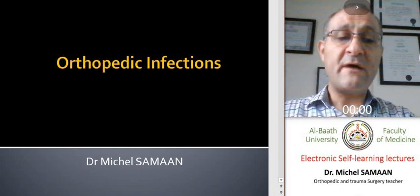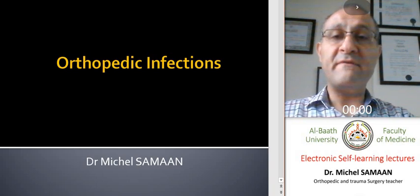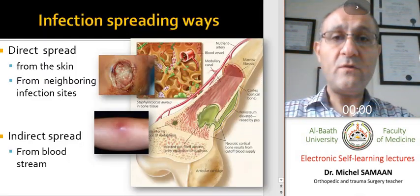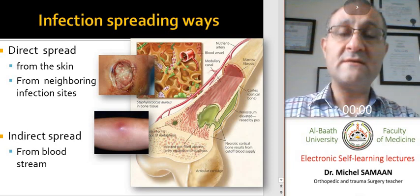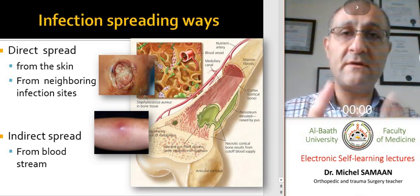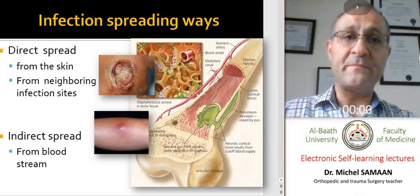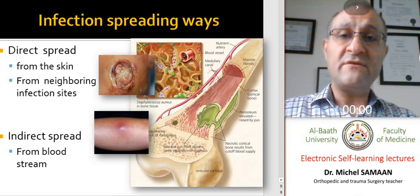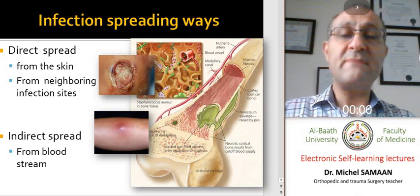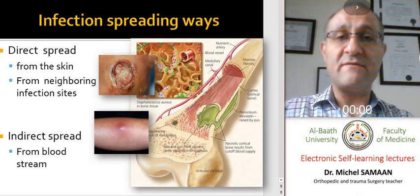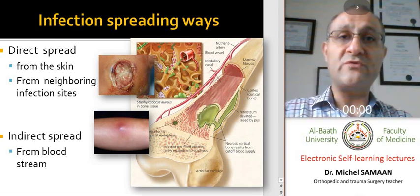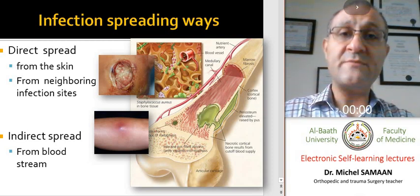My first topic will be about orthopedic infections: osteomyelitis and septic arthritis. These are the main topics. In general, the infection is caused by germs. These bacteria or germs or microorganisms can reach the site of the infection by two ways, either by direct spread —